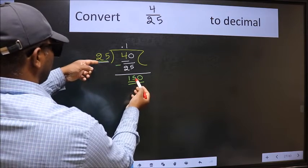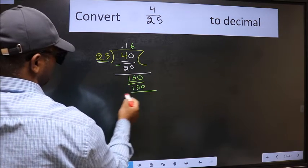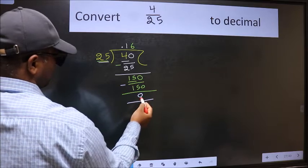When do we get 150 in the 25 table? 25 times 6 equals 150. Now we should subtract. We got 0.